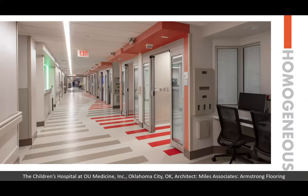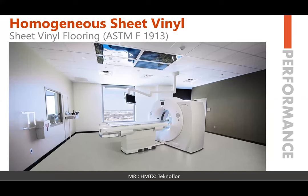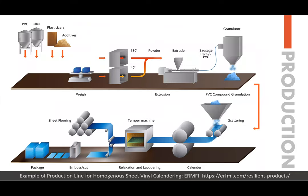The next product category is homogeneous sheet vinyl. Its performance standard is ASTM F1913. In terms of production, it is a sheet product — everything is mixed together, goes through the extruder, through the granulator, and then is utilized as part of a scattering process. It goes through a temper machine with a heating element, creating sheet flooring that is then rolled and boxed — and sometimes shipped just wrapped because it is in sheet format.